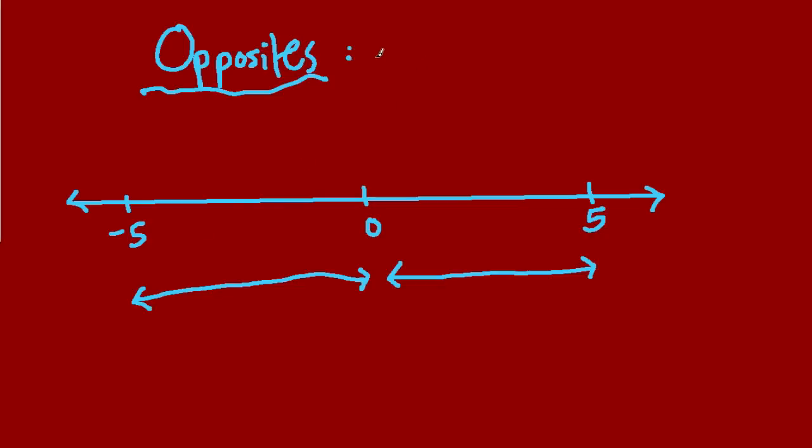It's because their distance to 0 is the exact same. And, in fact, we call that distance absolute value, so opposites have equal absolute value.